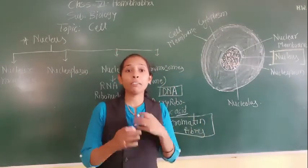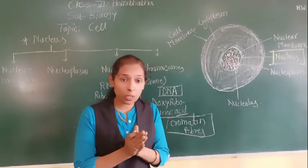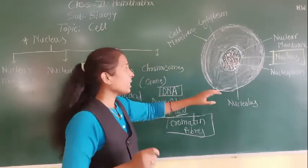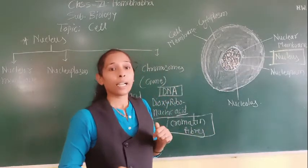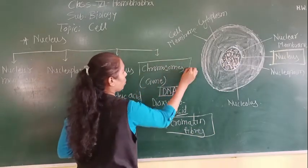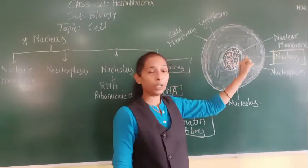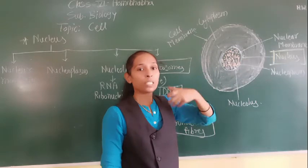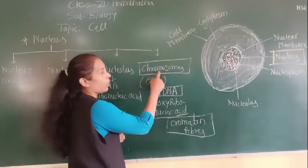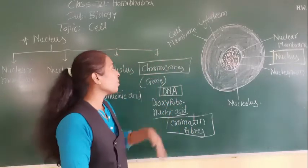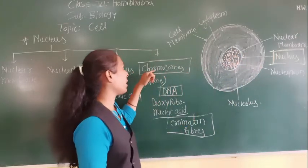During the division of the nucleus — for reproduction — these chromatin fibres get condensed and shrink. The condensed chromatin fibres are called chromosomes. That is why chromosomes are only visible when the nucleus is dividing; only at that time can we see the chromosomes.